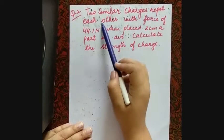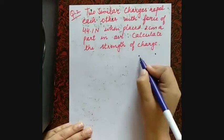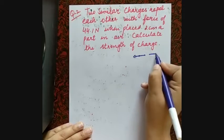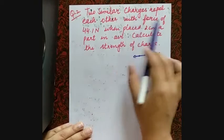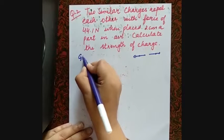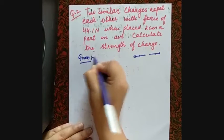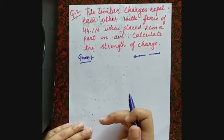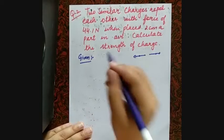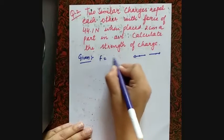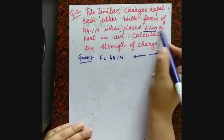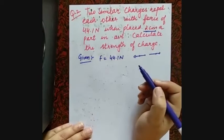Here's our second question. Two similar charges repel each other — they are moving away from each other — with a force of 44.1 Newtons. In every numerical, first write the given portion to make it easier. Given: force F = 44.1 N, and they are placed 2 centimeters apart.